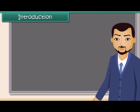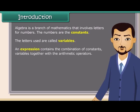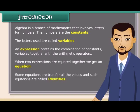Algebra is a branch of mathematics that involves letters for numbers. The numbers are the constants, and the letters used are called variables. An expression contains a combination of constants and variables together with the arithmetic operators. When two expressions are equated together, we get an equation. Some equations are true for all values, and such equations are called identities.